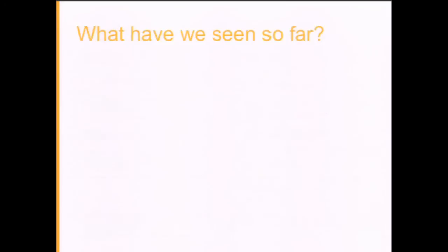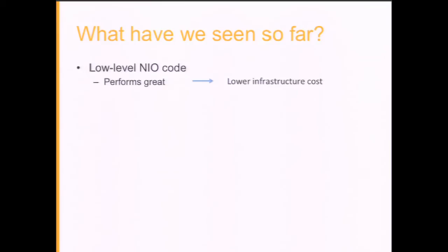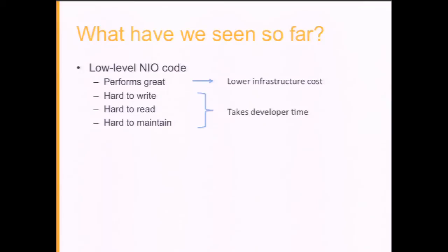Just to wrap up what we've seen so far about low-level NIO code: it performs great. If you spend a lot of time and energy, you will end up with a solution that performs great — no question. You save some infrastructure and money. But at the same time this is really hard to write. It's hard to read. If you hire a new developer, understanding what the code does is not a simple task. And of course it's hard to maintain. It takes a lot of time to deal with the low-level solution to make it right, and it's really easy to make mistakes.